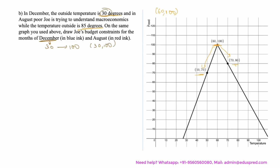If he heats the room by 10 degrees — increasing the temperature from 30 to 40 degrees — it costs $2 per degree, so $20 total. This leaves him with $100 minus $20 = $80 to spend on food, giving the point (40, 80).